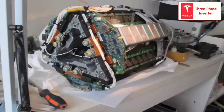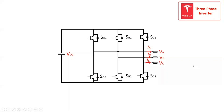The Tesla Model S uses a three-phase two-level inverter topology with an input battery voltage of 400 volts, arranged in a triangular structure. The conventional three-phase two-level inverter consists of a DC-link voltage and six switching power semiconductor devices.